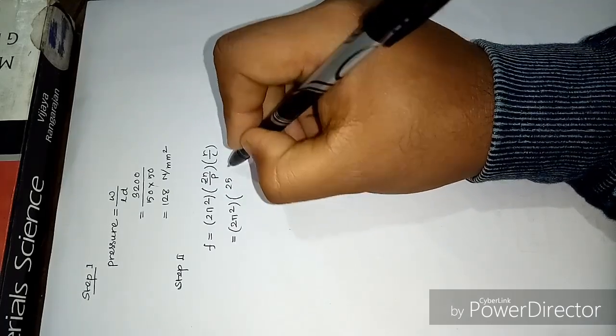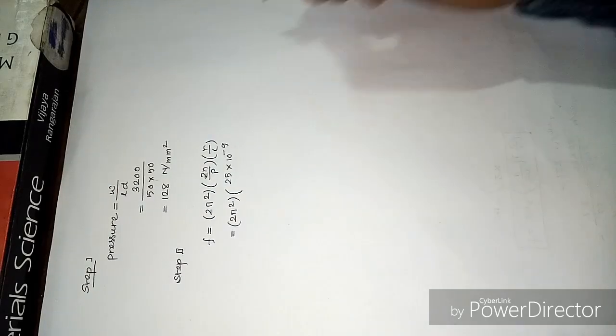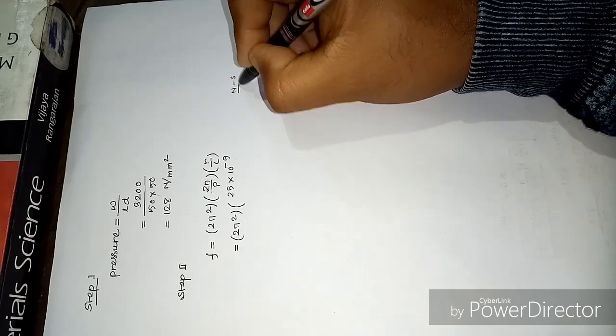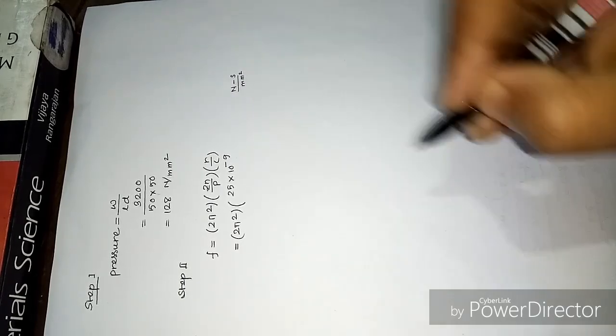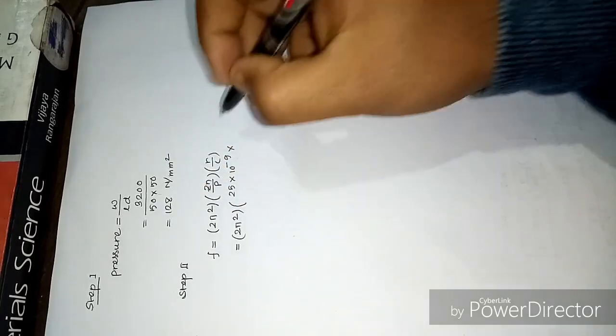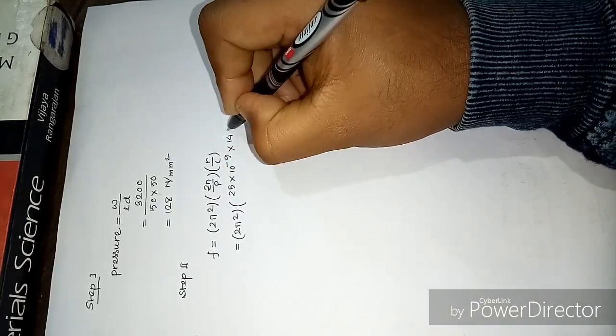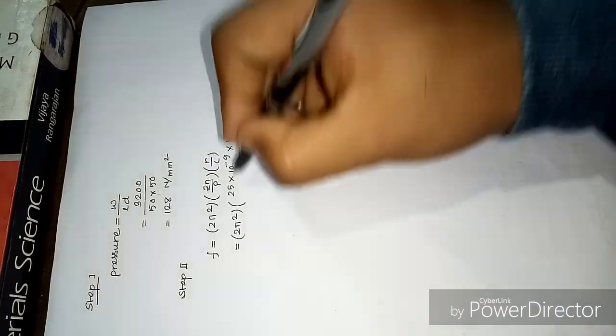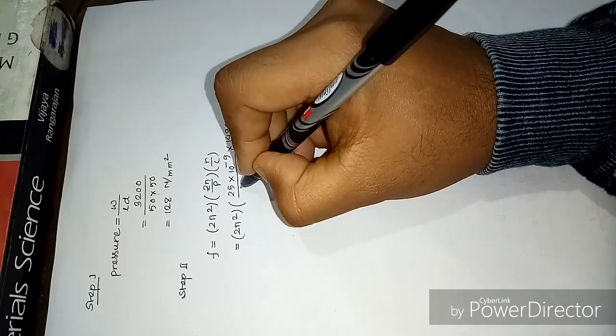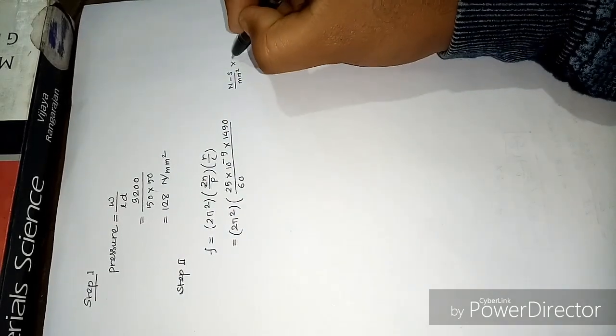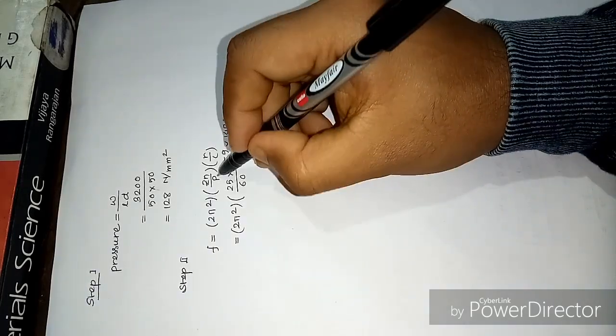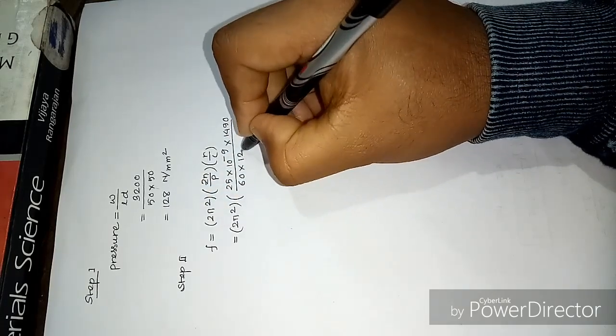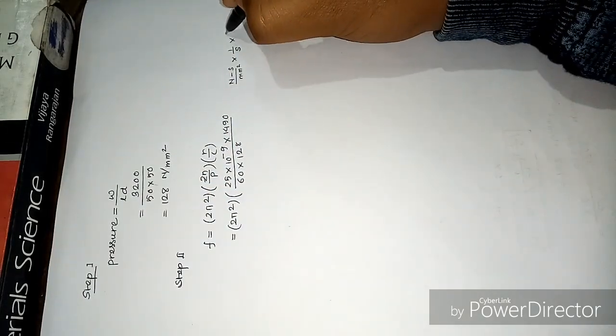That converted will be Newton second per mm square. The speed N is 1490 rpm. To convert to per second, we divide by 60. Now all units are in seconds. Pressure we have determined is 1.28 Newton per mm square.